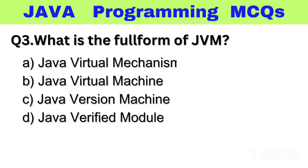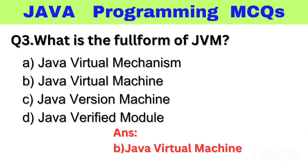Question number 3. What is the full form of JVM? Option A: Java Virtual Mechanism, B: Java Virtual Machine, C: Java Version Machine, D: Java Verified Module. The right answer is option B, Java Virtual Machine.